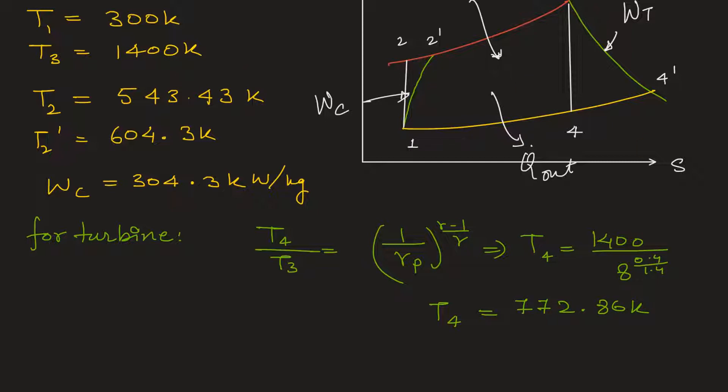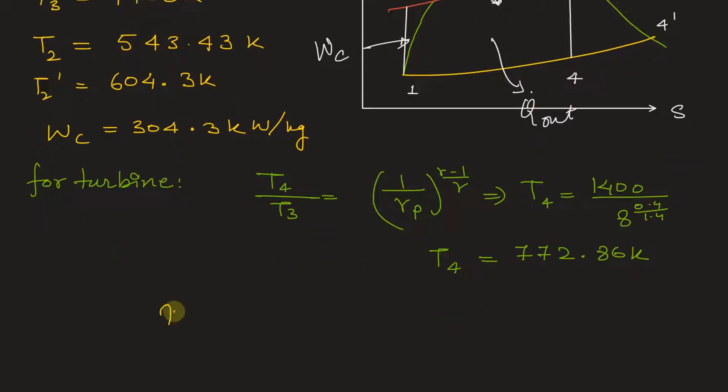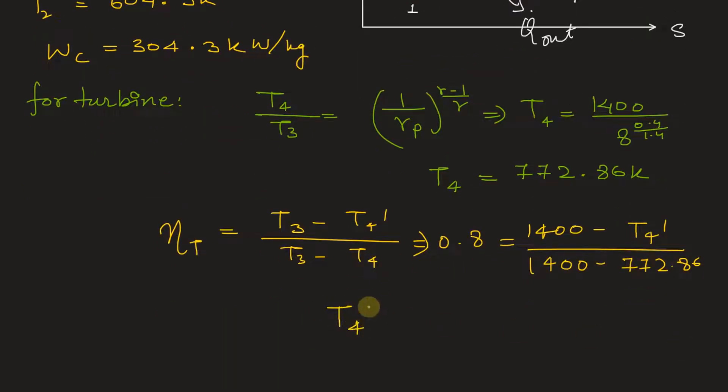Now from the efficiency relation, the turbine efficiency, eta T that is given by T3 minus T4 dash divided by T3 minus T4, and eta T is 0.8. It's given in the problem that will be equal to T3 is 1400 minus T4 dash, which we need to find out, divided by 1400 minus 772.86. So from here we can get T4 dash is equal to 898.3 Kelvin.